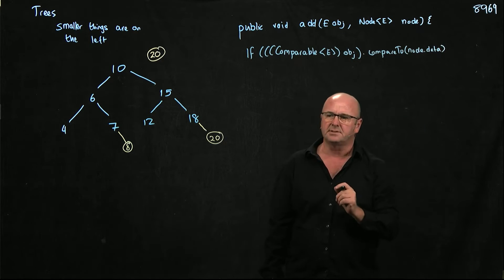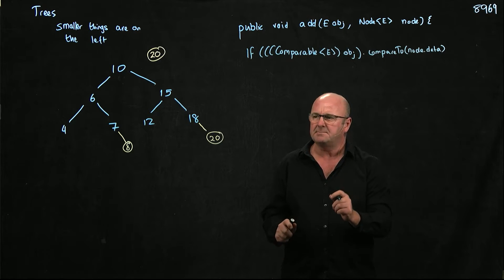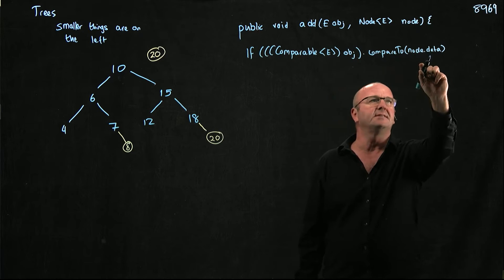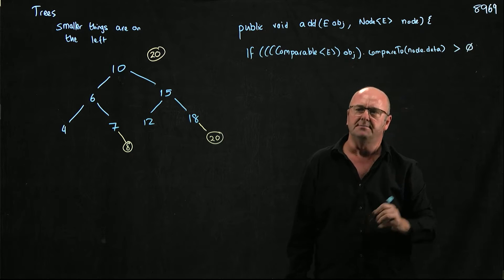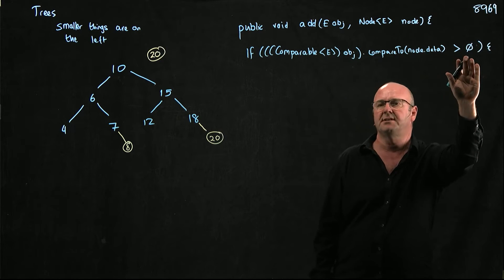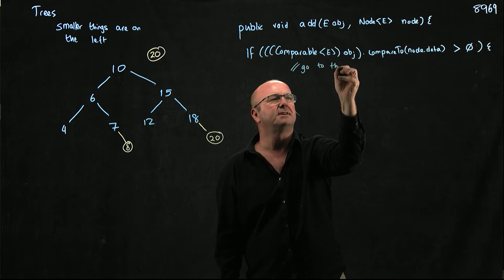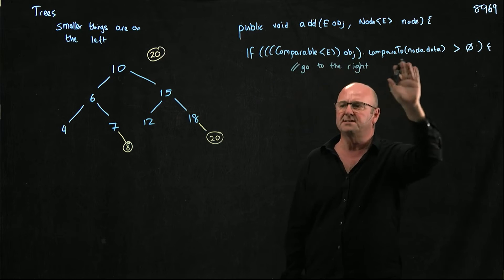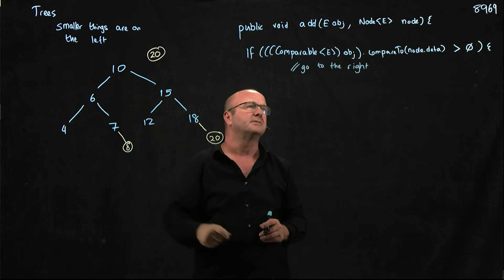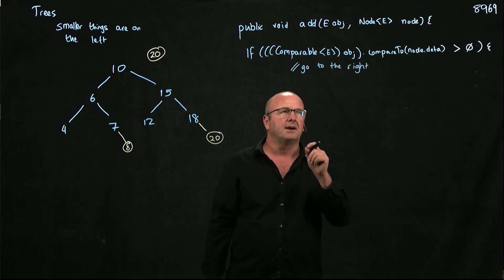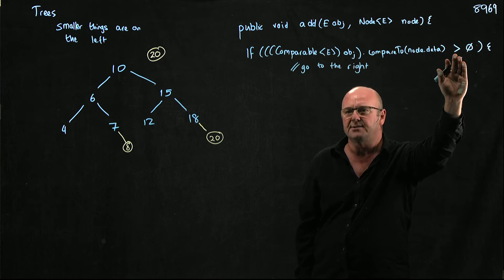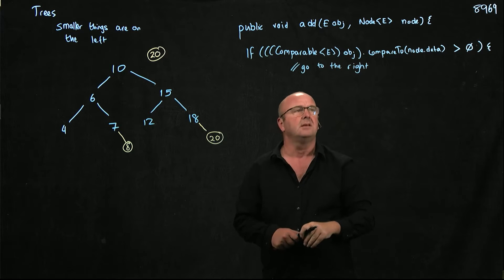This is a point where you need to pause and think about which way round the comparison has to be. If the object is bigger than data, compareTo returns a value greater than zero and we go to the right. So node.data is our 10, our object is our 20 — if 20 is bigger than 10, we go to the right. You could also compare node.data to object and flip greater than to less than, but you have to be consistent.